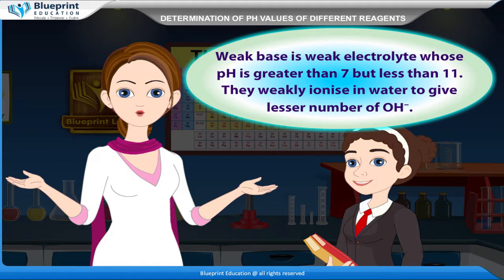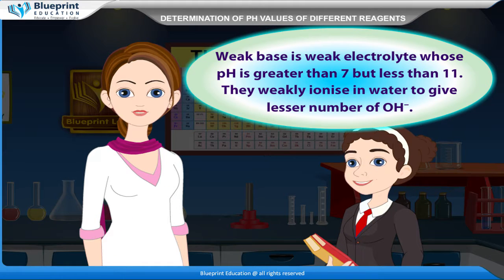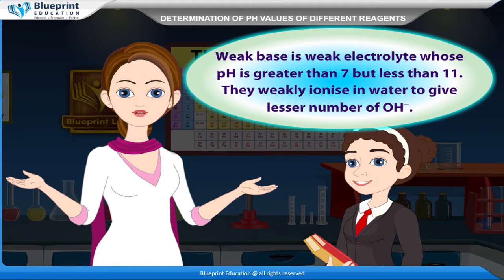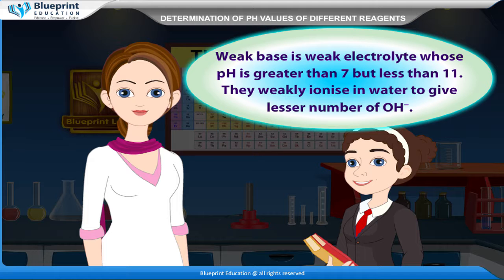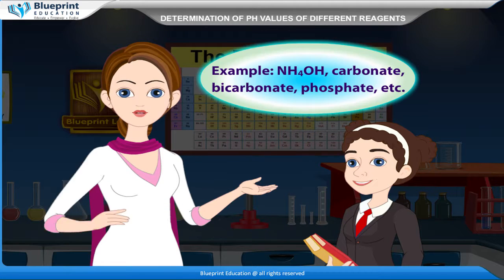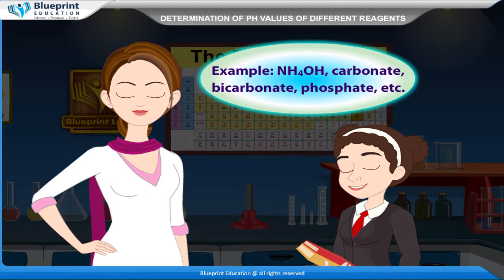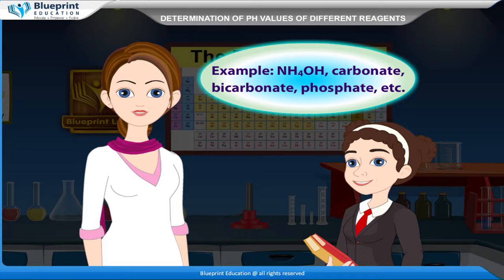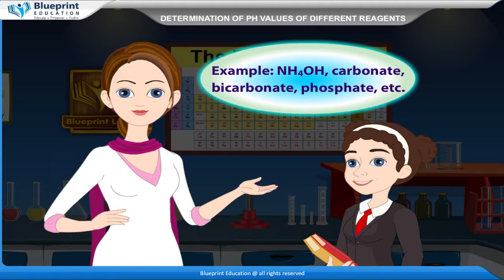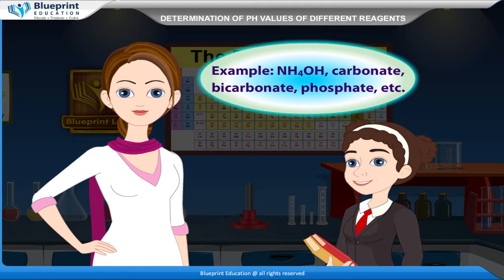A weak base is a weak electrolyte whose pH is greater than 7 but less than 11. They weakly ionize in water to give a lesser number of OH- ions. Examples: NH4OH, carbonate, bicarbonate, phosphate, etc.